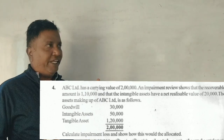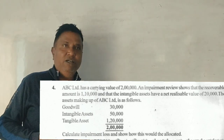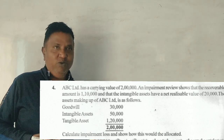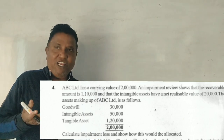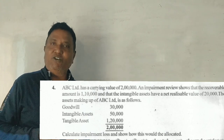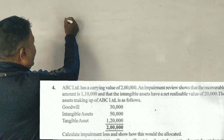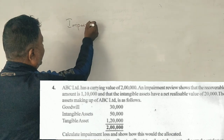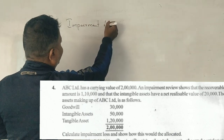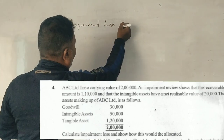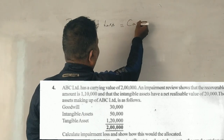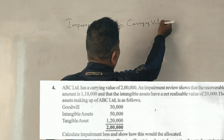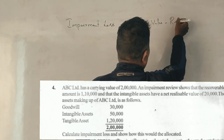Impairment is something related to the reduced value — specifically the carrying value of the asset. Impairment loss arises out of carrying value minus recoverable value.